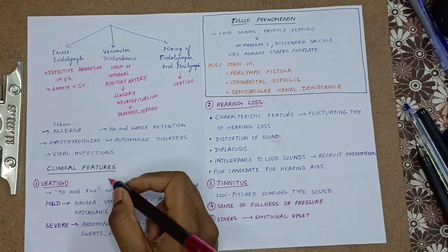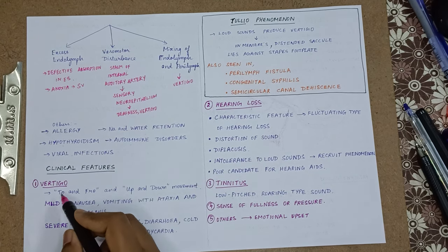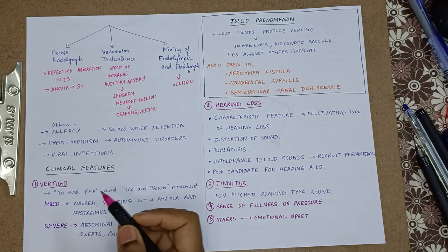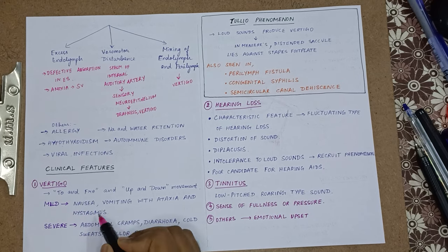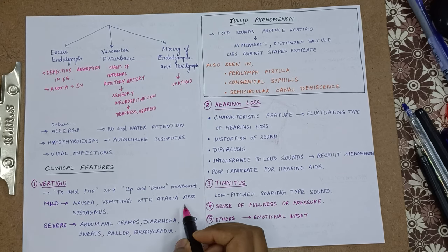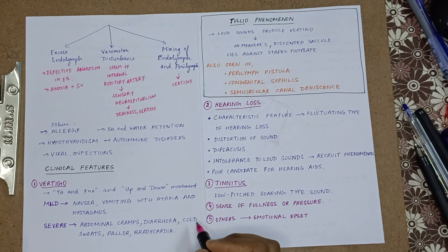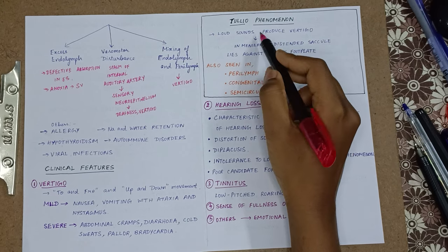Now we will see the clinical features — how will a Meniere's disease patient present? First, he will have complaints of vertigo. Vertigo means to and fro movements and up and down movements, like giddiness. Mild form of vertigo will have nausea, vomiting with ataxia and nystagmus. Severe form of vertigo may present with abdominal cramps, diarrhea, cold sweats, pallor, and bradycardia.